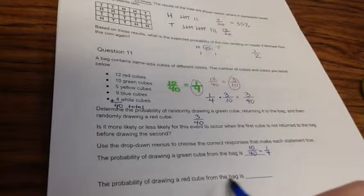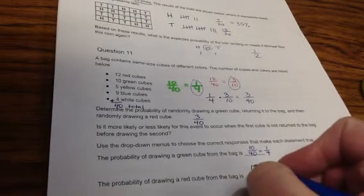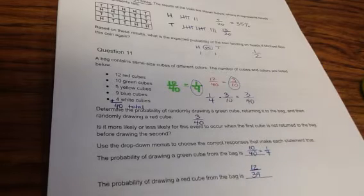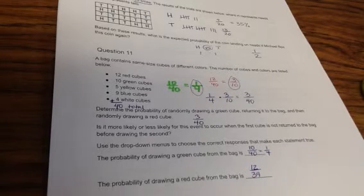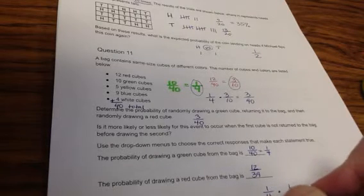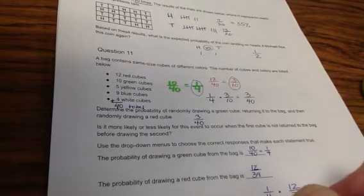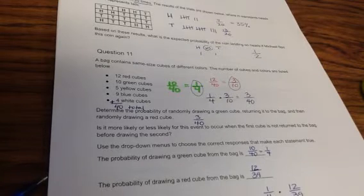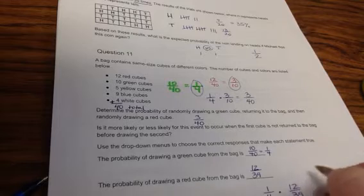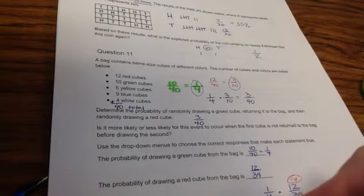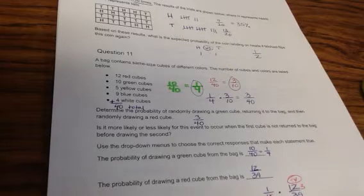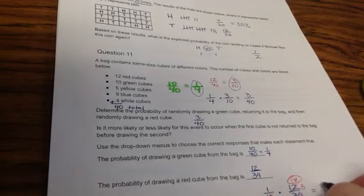They say use the drop-down menus to choose the correct responses that will make each statement true. The probability of drawing a green cube from the bag, it's still the first event, is still going to be 10 out of 40, which is equal to 1 fourth. The probability of drawing a red cube from the bag now is 12 out of 39, because there's one less cube in the bag. Now we're going to multiply 1 fourth times 12 over 39. We remember our buddies, the factor bubbles, so we're going to divide by 4. This equals 1, this equals 3, and so this is going to equal 3 out of 39.